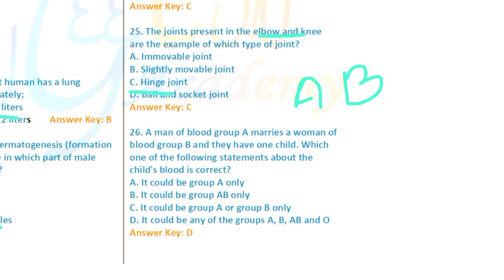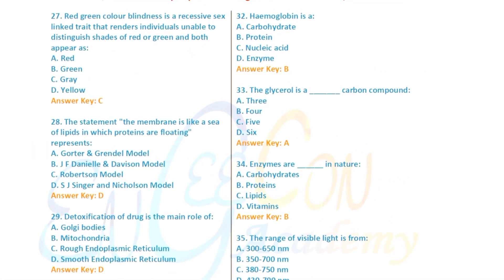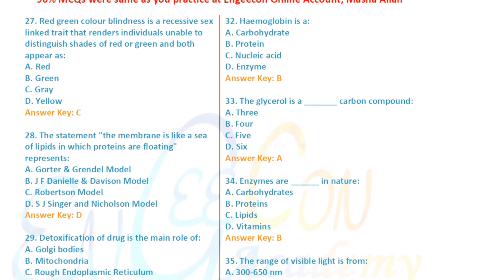Blood group prediction for the child of a group A father and group B mother: the possible blood groups are A, B, AB, or O. Question: Red-green color blindness is a sex-linked trait that renders individuals unable to distinguish red from green — option C is ticked.